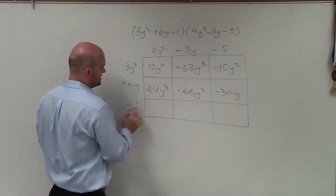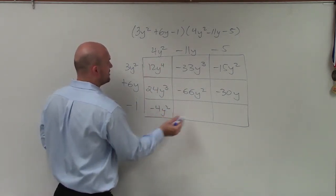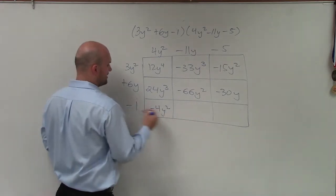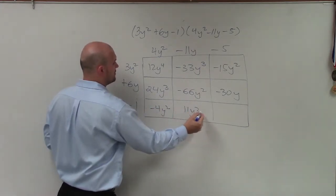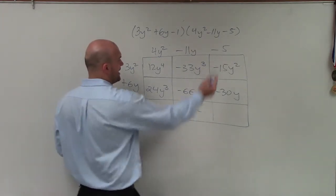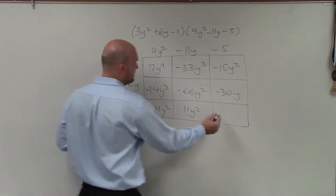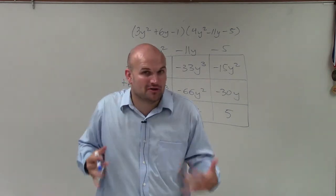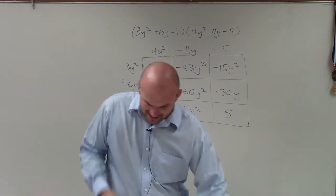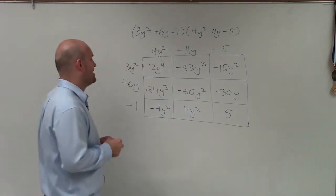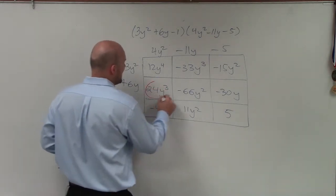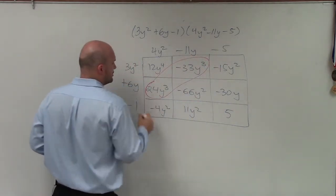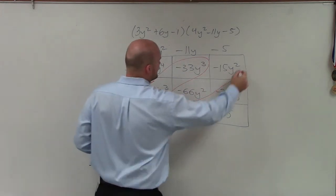Then I do 4y times -1, which is -4y². 11y times -1 is going to be positive 11y. And -5 times -1 is going to be a positive 5. Now what's nice about doing this rectangle is, one, you have all the answers inside these little square rectangles. The next thing that's nice about them is if you kind of look at the diagonals, you start to see that there are like terms.